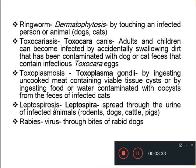Next is Leptospirosis, which is caused by a spirochete prokaryote and is spread through the urine of infected animals like rodents, dogs, cats, cattle, and pigs. Rabies is caused by a virus and is spread to humans through the bites of rabid dogs. There are more than 150 types of zoonosis, and these are some examples.